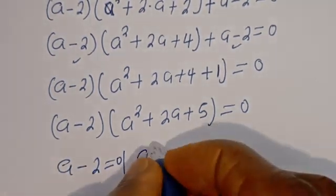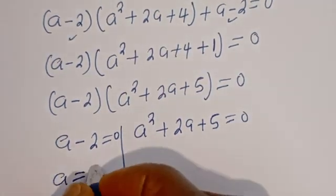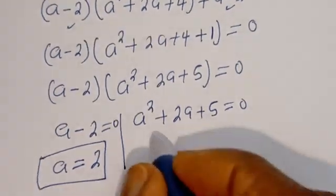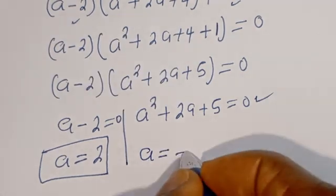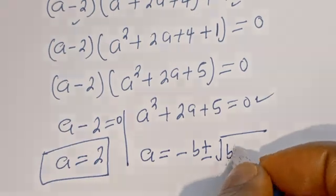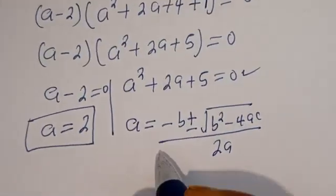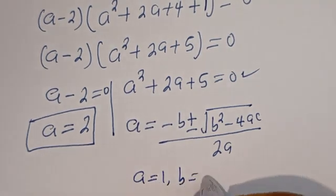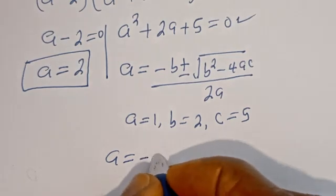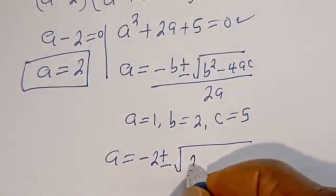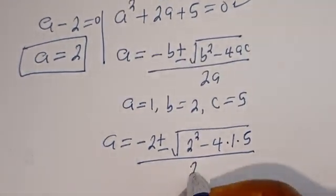There are two cases. The first case is A minus 2 equal to 0, giving A equals 2. The second case is A squared plus 2A plus 5 equal to 0, which is a quadratic equation solved using the quadratic formula: A equals minus b plus or minus square root of b squared minus 4ac, divided by 2a. From this equation, a equals 1, b equals 2, c equals 5.